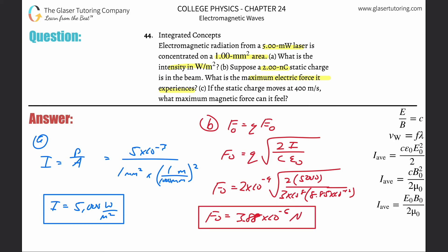Letter C. If the static charge moves at 400 meters per second, what maximum magnetic force can it feel? We need a formula now for magnetic force. F equals QVB.